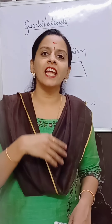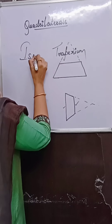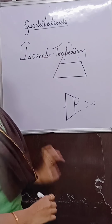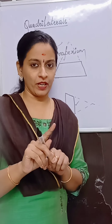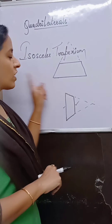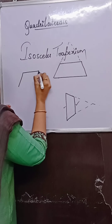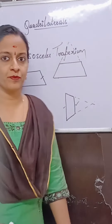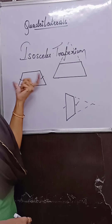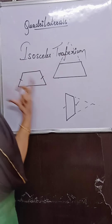Now let us learn about the next type of trapezium — the isosceles trapezium. Just like an isosceles triangle has two congruent sides, in an isosceles trapezium the two non-parallel sides are congruent.